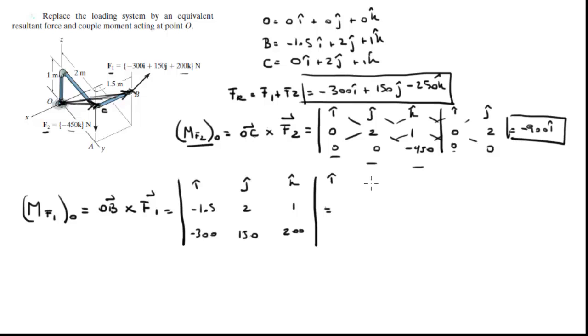You rewrite your first and second column, i, j, minus 1.5 and 2, minus 300 and 150. We got no zeros so this is going to be a bit of a pain. We do your positive diagonals, i times 2 times 200 is equal to 400 in the i, j times 1 times negative 300 is minus 300 in the j, k times minus 1.5 times 150 is minus 225 in the k.